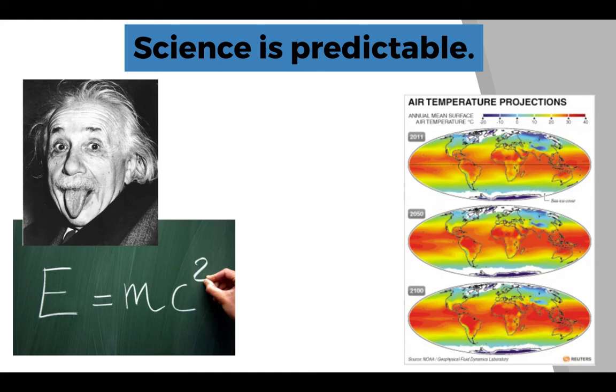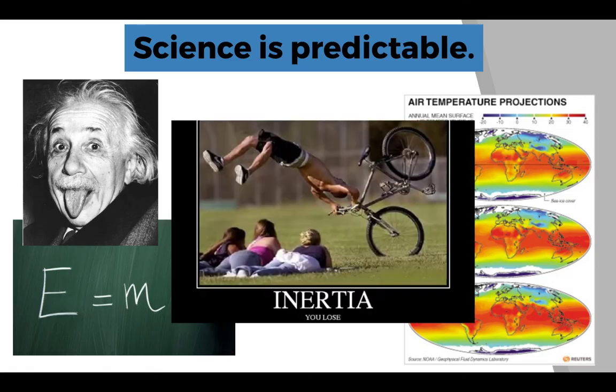We might use models. Here's an air temperature or climate model. We might use it to make predictions about how the earth is now and how the earth might be in the future. Or we might use some laws that we come up with. So in this case, Newton's laws.